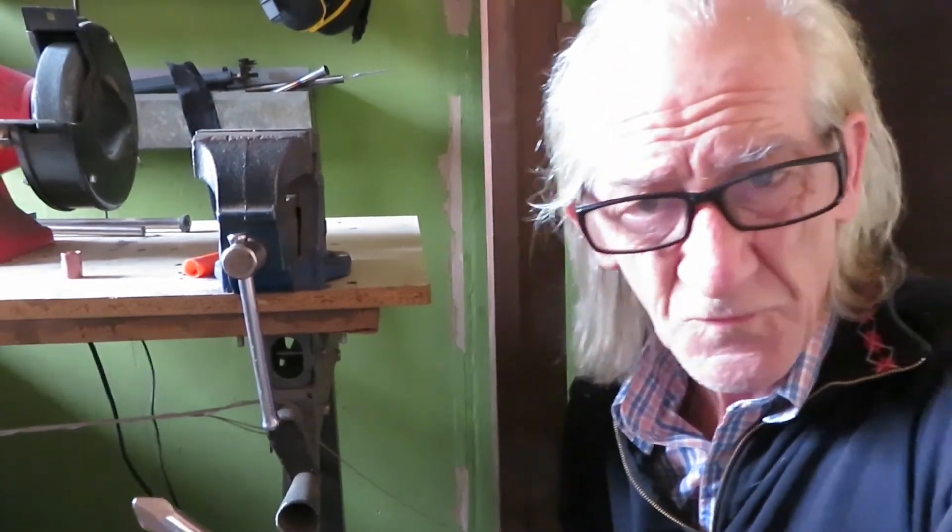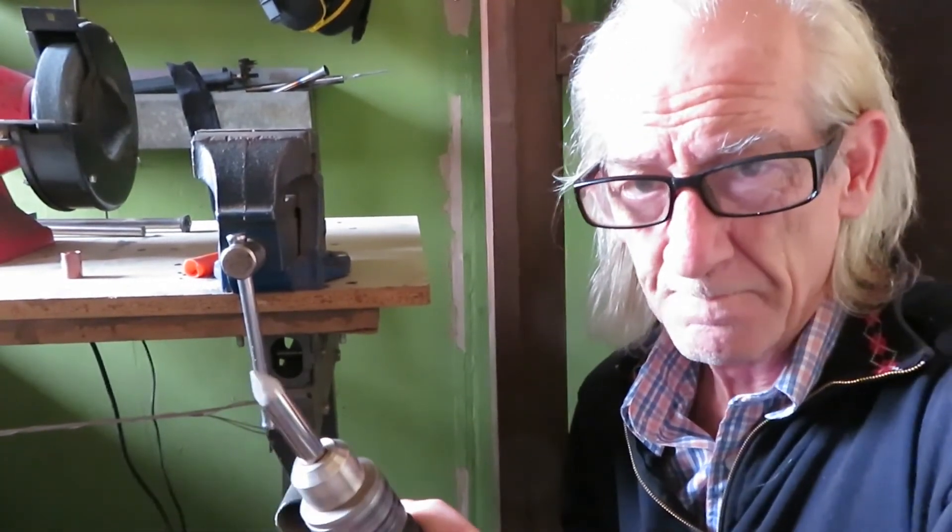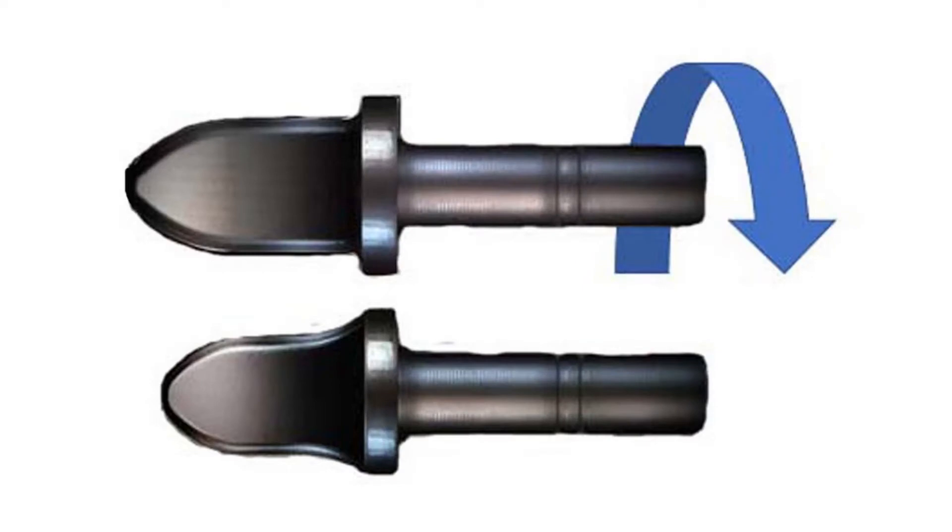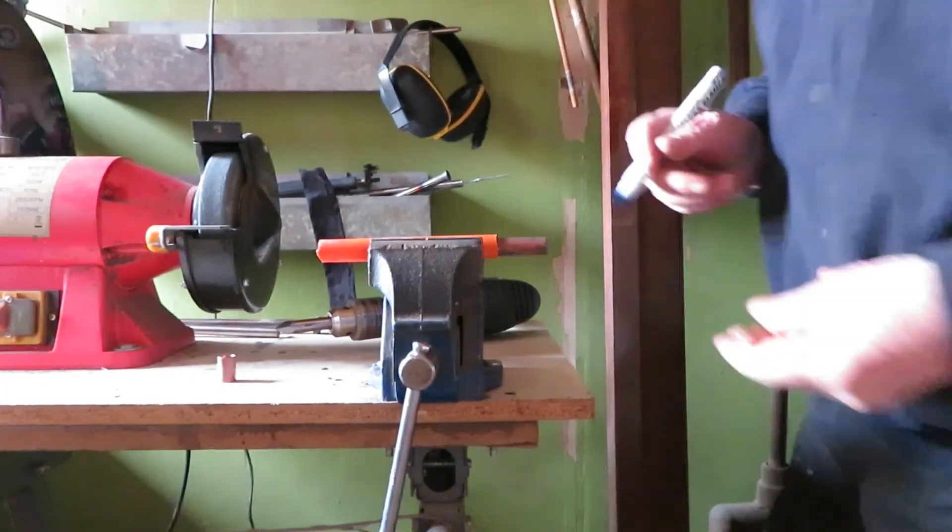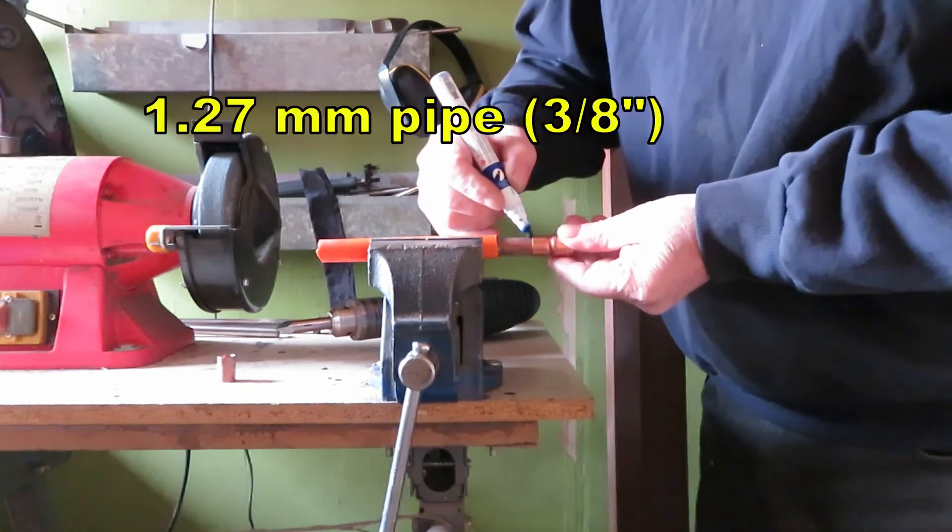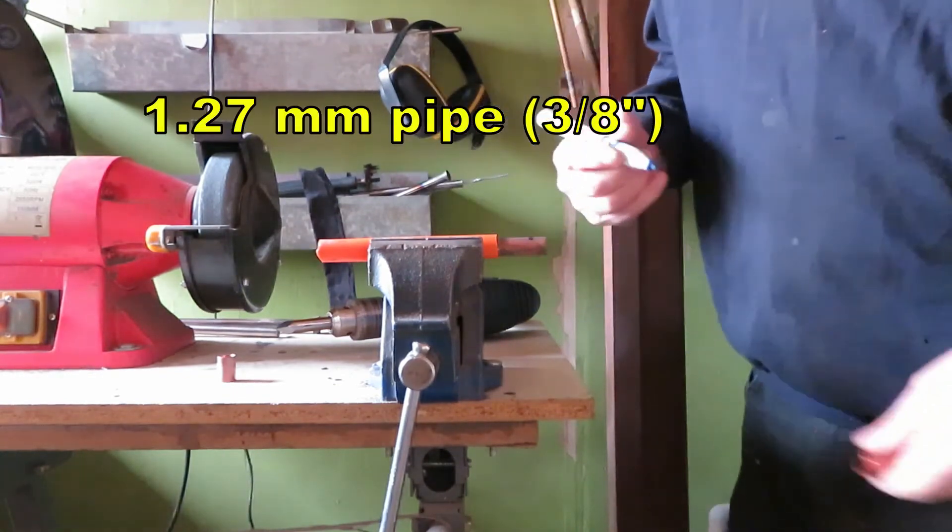We basically have two methods for swaging, or swagging if you prefer: punch forming and spin forming. Punch forming means hammering this tool into the annealed end of a pipe. Spin forming is done with this tool placed in the mandrel of an electric drill. We have to expand the pipe a distance equivalent to the diameter of the pipe.